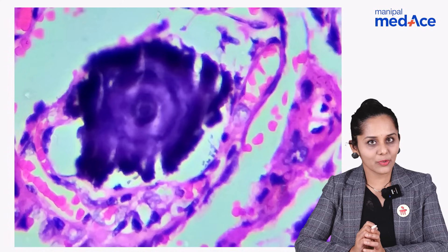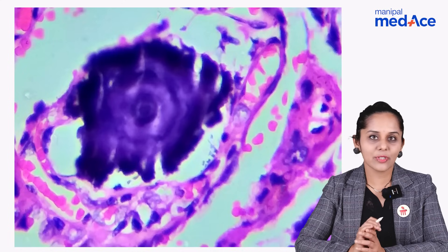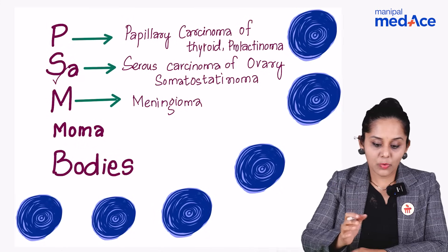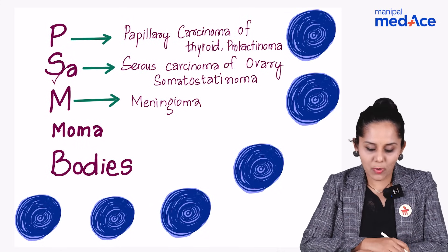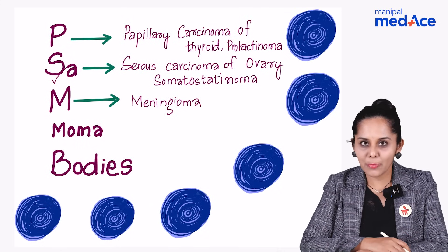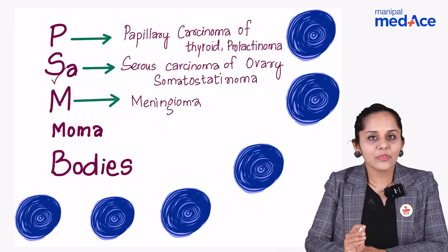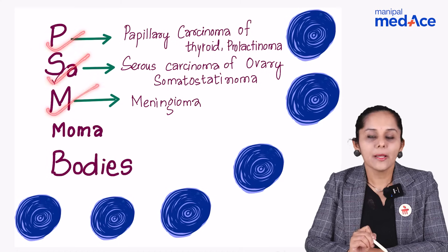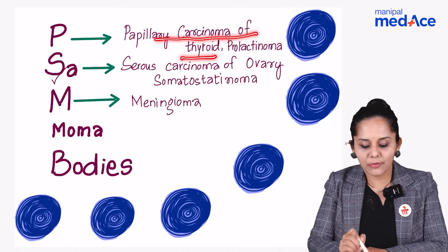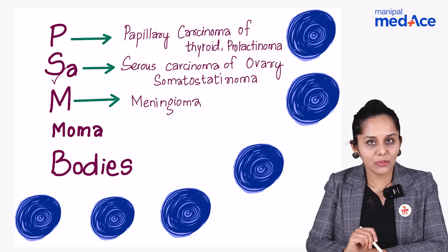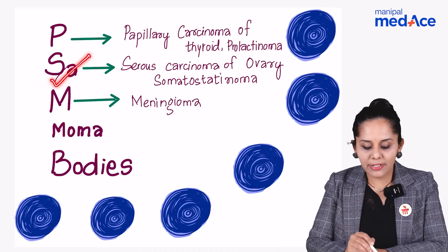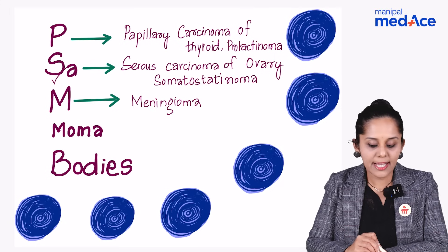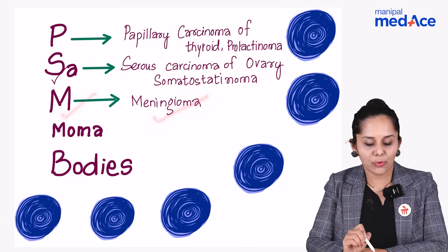Now if someone asks you, what are the different types of tumors where you see psammoma bodies? Just remember the mnemonic P, S, and M. P for papillary carcinoma of thyroid and also for prolactinoma, which is called as pituitary stone. S for serous carcinoma of the ovary and also somatostatinomas, and M for meningioma.